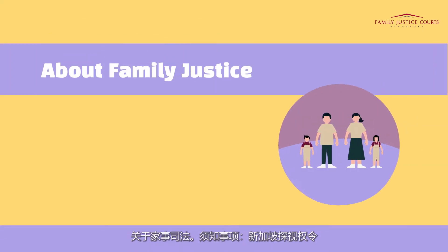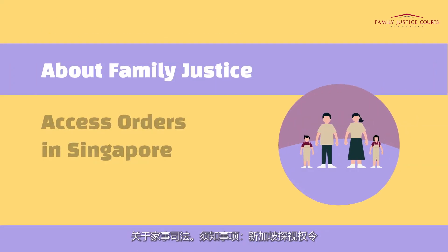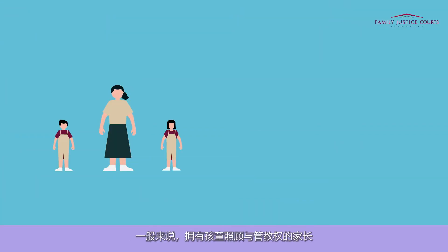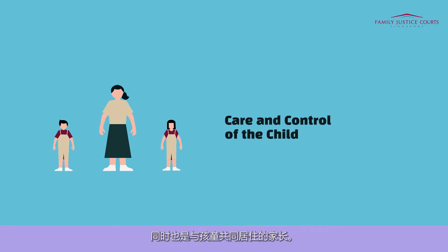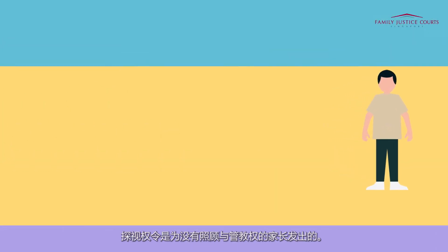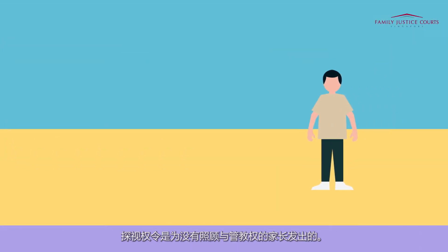About Family Justice: What you need to know about Access Orders in Singapore. What are Access Orders? Generally, the parent who has care and control of the child is the parent with whom the child or children live with. Access Orders are made for the parent who does not have care and control.